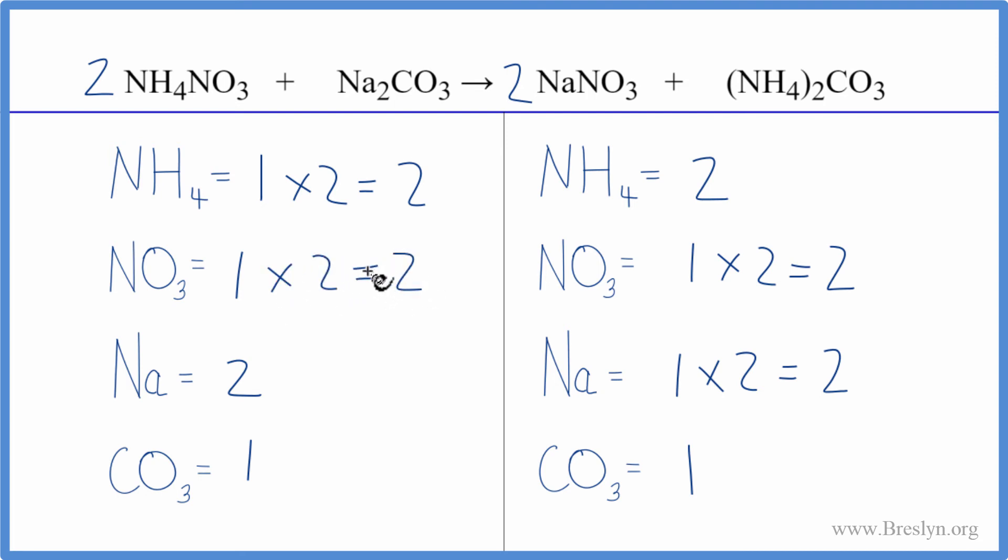This equation is balanced. So you can see the utility of counting these polyatomic ions as one item if they appear on both sides of the equation. Makes it a lot easier, a lot less prone to error, and it gives you the same answer as if you count each one up individually.